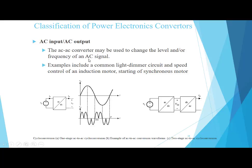Cyclo converter क्या करता है कि AC voltage का level change करता है या उसकी frequency change कर देता है. Examples include a common light dimmer circuit and speed control of an induction motor, starting of synchronous motor.